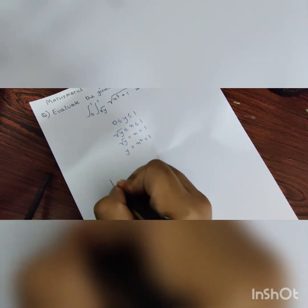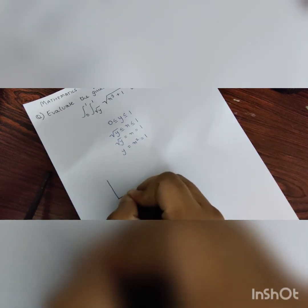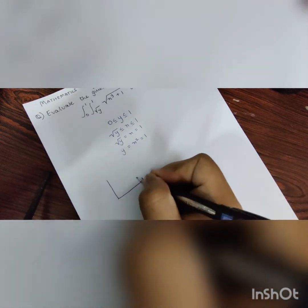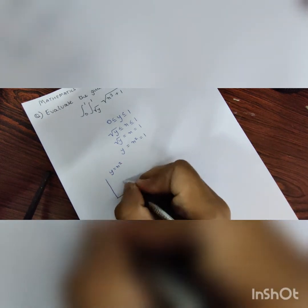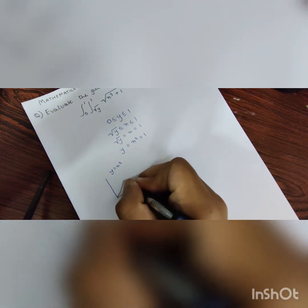the graph which we can make is this where y is equal to x squared, which is somewhat like this.